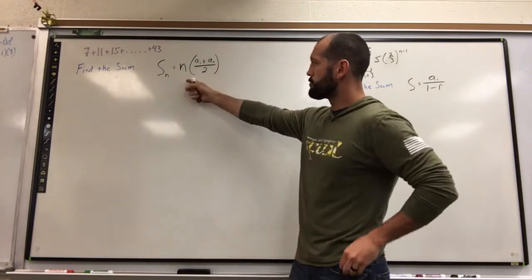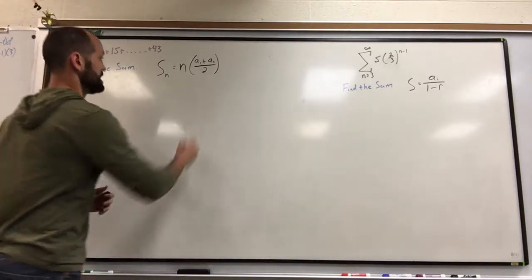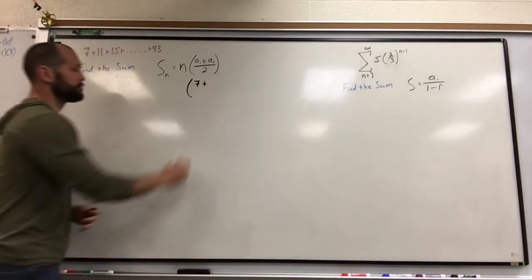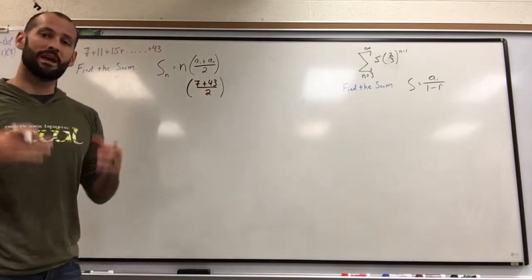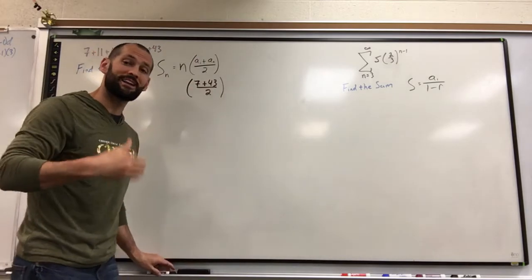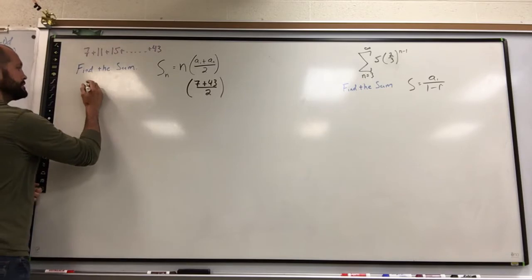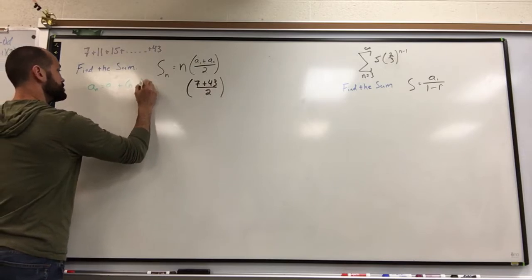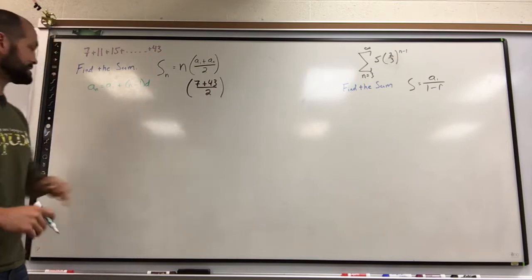We do want the sum, so we have the formula right here. Let's plug in what we know. a sub 1, being the first term, I know is 7. a sub n, being my last term, I know it'll be 43. I don't know n though, so we have limited information, but it's not that you don't have everything you need. We just got to use some prior knowledge. So in order to find n, I have to go back to my sequence formula: a sub n equals a sub 1 plus n minus 1 times our common difference d. I do have everything I need to solve for n at this point.